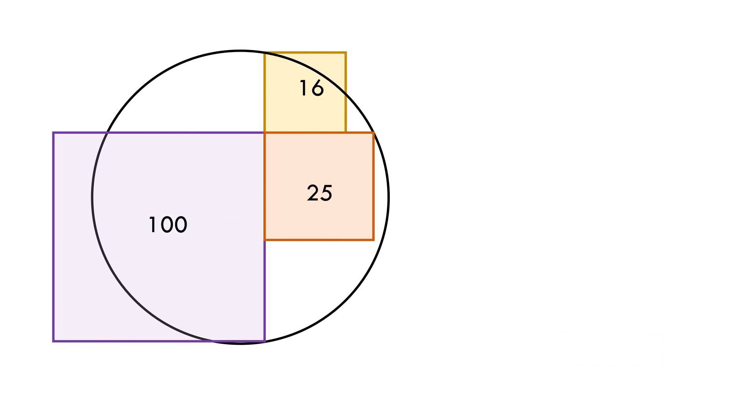The very first thing that strikes anyone is to find the sides of the squares. So let's do that and they come up to be 5 units, 4 units, and 10 units like shown.